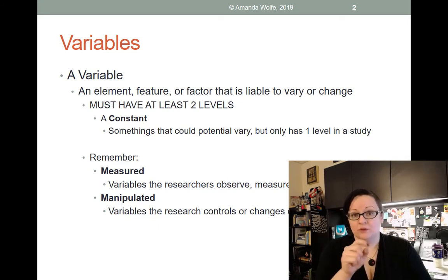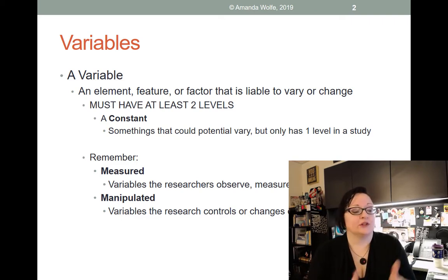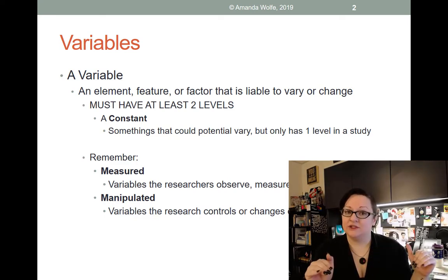Manipulation means that you, the researcher, are actually changing something, whereas measured variables are just things that we measure. We don't actually try to influence them or change them, or give one group one version and one group another. We're literally just measuring.